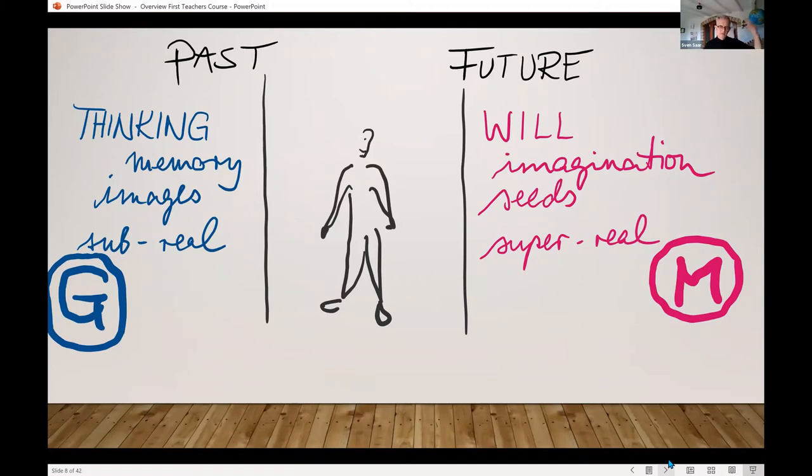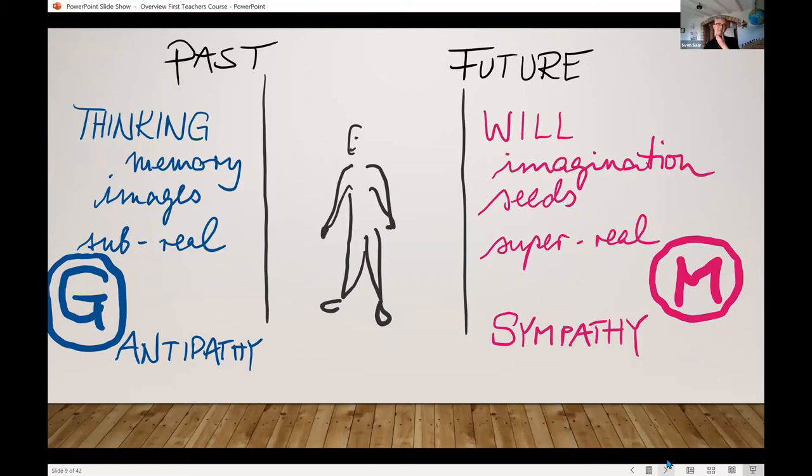One relies on memory. The other relies on my ability to imagine it in the future. That gesture I characterized with a G, Steiner calls antipathy. The gesture I characterized with an M, Steiner calls sympathy. I reach for something.